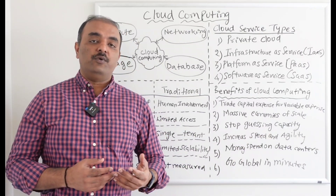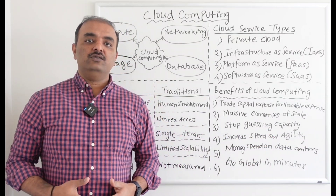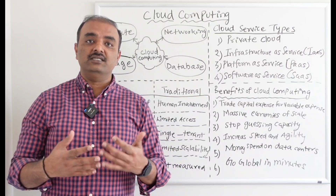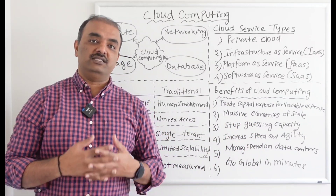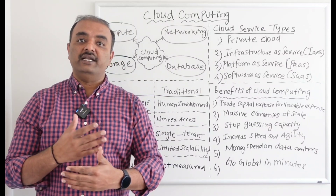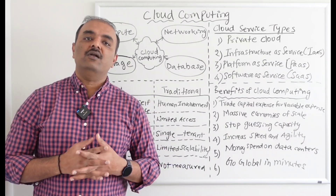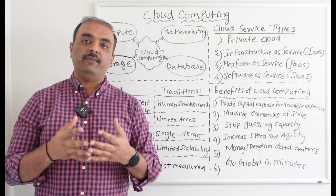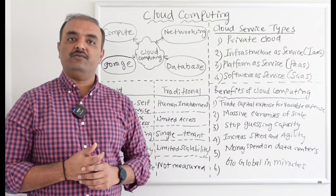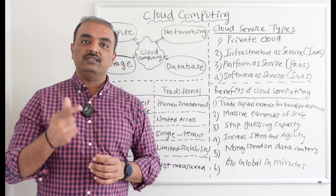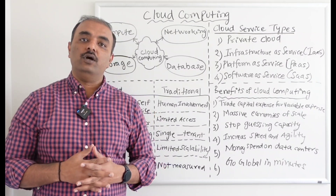Fourth is increased speed and agility — if you want to deploy a server, it's done in minutes. If your requirements or expectations change, you can deploy operating systems quickly and change them anytime. Fifth is reduced spending on data centers — on-premises requires a lot of money at the initial stages for data centers and databases, which can be eliminated with cloud computing. Finally, go global in minutes — if you want to extend your business worldwide, just use cloud services like AWS or Google, which have infrastructure across the world, and you can go global within minutes.